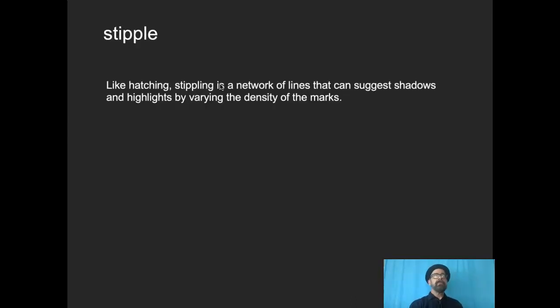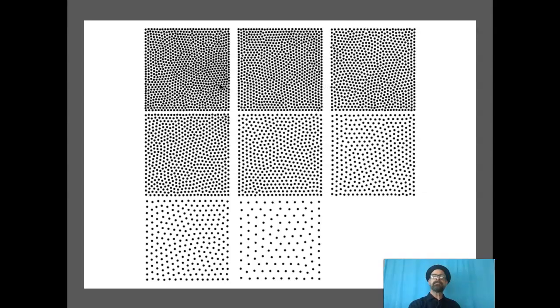Now stippling, very similar to hatching. This is where you use dots, which are essentially defined as very short lines. And again, in a network, we can vary the density of those dots to create a sense of highlight and shadow. The more densely packed those dots are, the darker the value will be. So here's stippling in action. Even these stippled lines suggest volume.